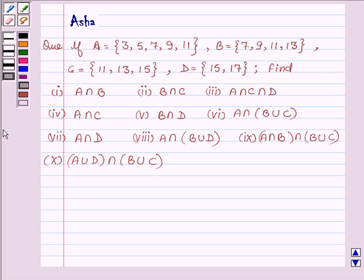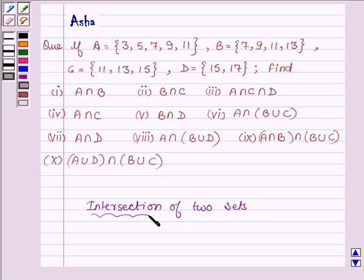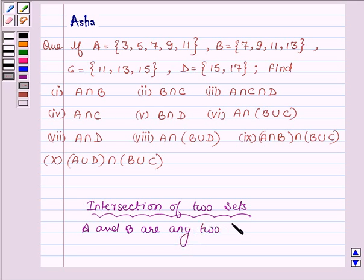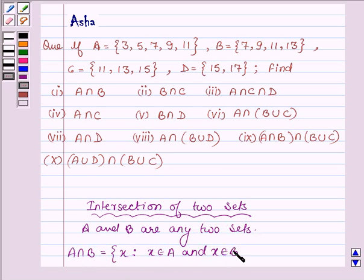Before finding the solution, let us first learn what is the intersection of any two sets. Suppose A and B are any two sets. Then A intersection B contains all those X such that X belongs to both A and B. So the definition of intersection of two sets is the key idea with which we will solve this problem.